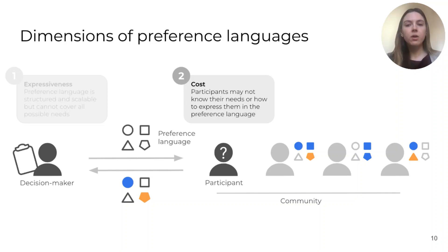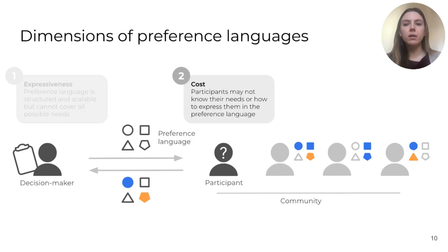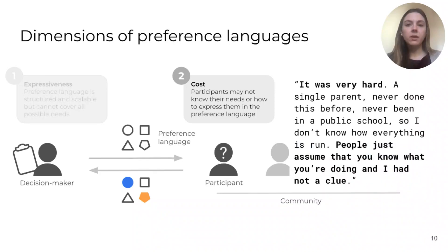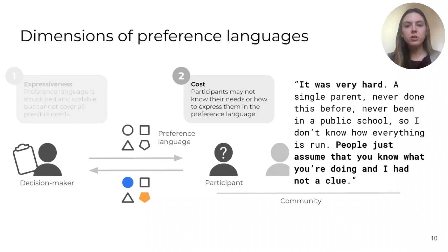The second dimension is cost. Cost refers to how much time and effort it takes for participants to figure out how to express their needs and goals in the structured preference language. Cost might be high because the person hasn't thought about their needs in this domain before — for example, they don't know what to look for in a school — or because the preference language is not a good match for how they think about their needs. For example, they know what they want in a school, but they don't know which of the available schools offers those things. Another parent we interviewed actually attended a week-long class offered in her community to learn about the public school enrollment process. She told us that this process was very hard: "People just assume that you know what you're doing and I had not a clue." Again, costs can shape opportunities for participation in a problematic way when some participants face higher costs than others, or when some participants have more time and resources to invest in the process.